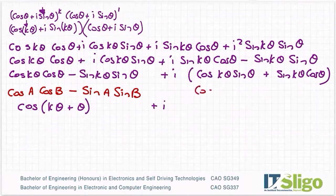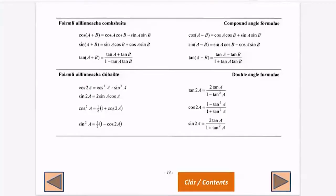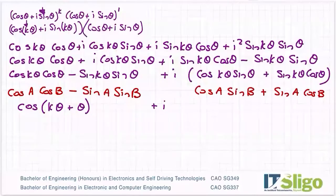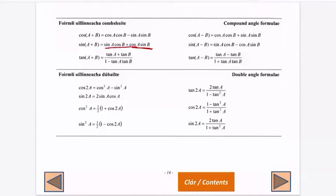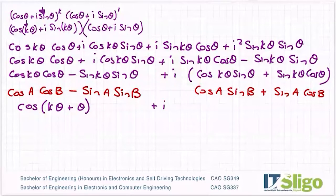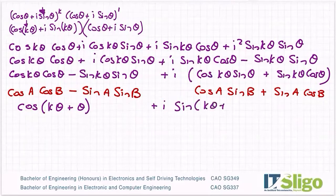And I'm going to do the same here. What have I here? I have cos A sine B plus sine A cos B. It's this one here. I just have it written backwards. So sine of A plus B is that one. Sine of A plus B.